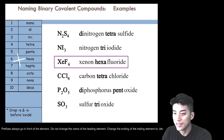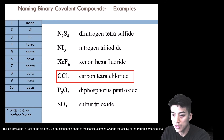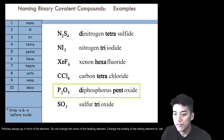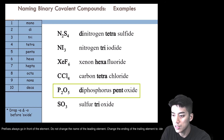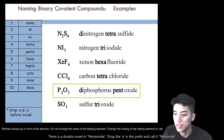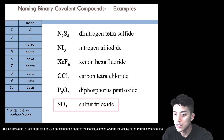XeF₆ is xenon hexafluoride. CCl₄ — think of this as C₁Cl₄ because there's just one carbon — you can call this carbon tetrachloride. You don't have to call it monocarbon tetrachloride because carbon is the leading element and there's only one. P₂O₅ is called diphosphorus pentoxide. Drop the 'a' before 'oxide' because of the double-vowel language rule — just call it pentoxide instead of penta-oxide. The last one is SO₃, which is sulfur trioxide. Omit the mono in front of sulfur and just call it sulfur trioxide.